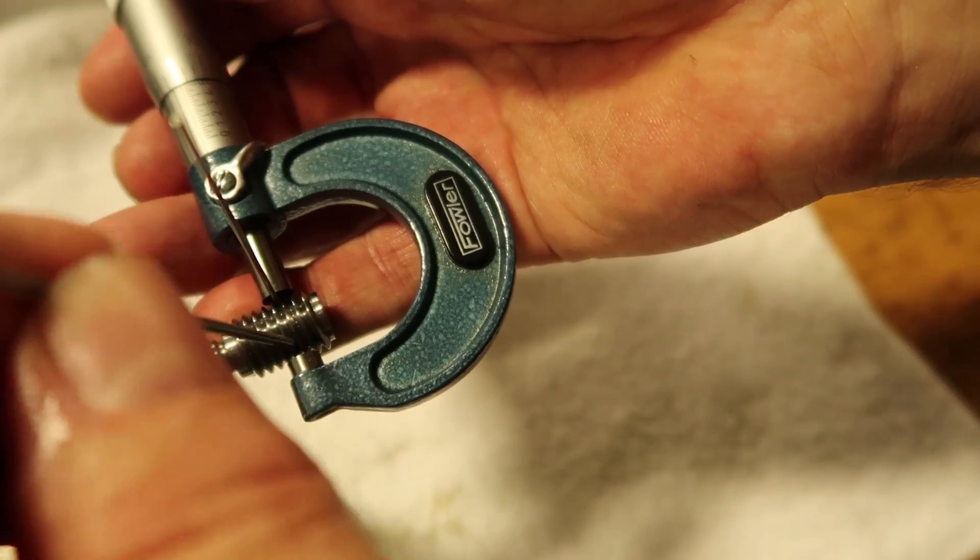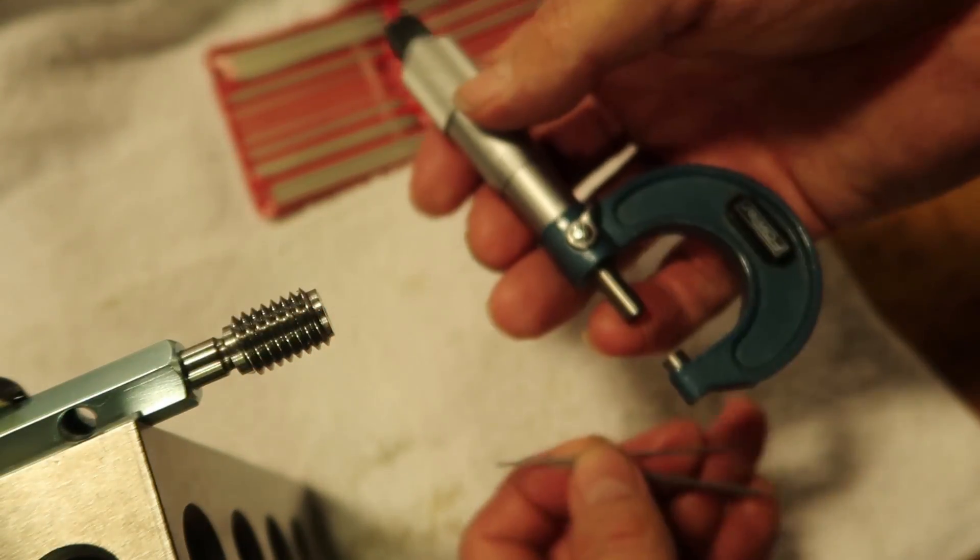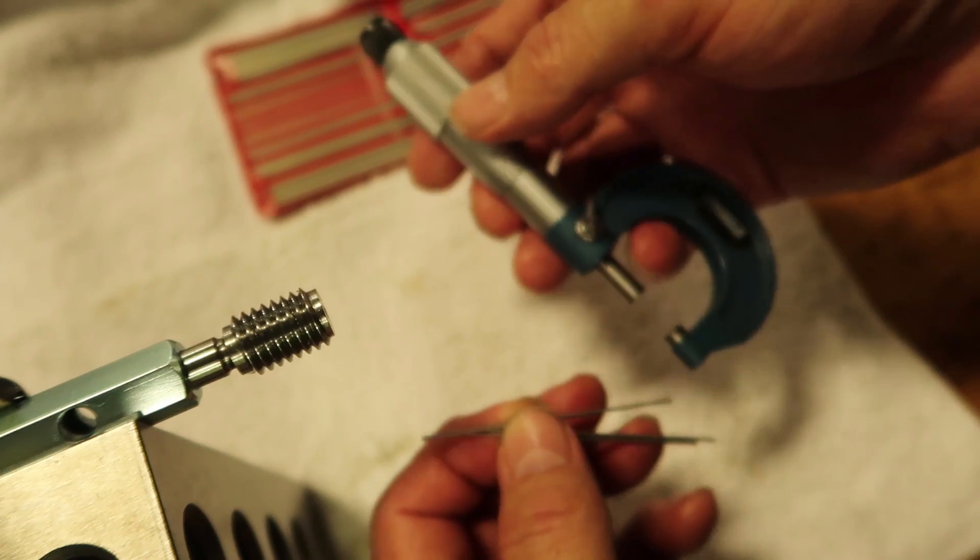And then when you're done, you release the micrometer, and you grab this wire, and you can lift them all out, and you don't drop them into the chip pan or anything like that.